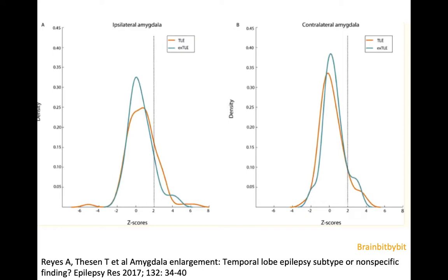Initially it was thought that amygdala enlargement was only seen in patients with temporal lobe epilepsy. But in 2017, a large multicenter study was published with 136 patients with different kinds of epilepsy and 233 controls. It was shown that enlargement occurred in both temporal lobe epilepsy and localized extra-temporal lobe epilepsy, but not in generalized epilepsy or healthy controls — suggesting amygdala enlargement is linked to localized epilepsy.